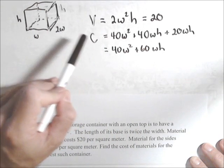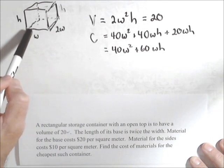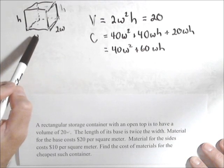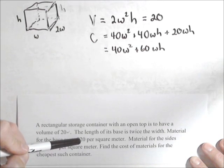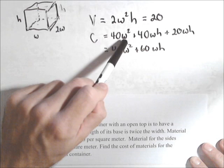For the cost, the base is 2W by W, so that's 2W² times $20, so that's where the 40W² came from.